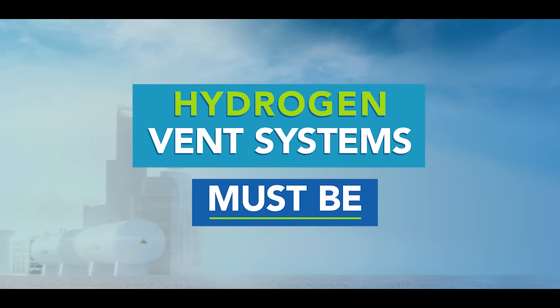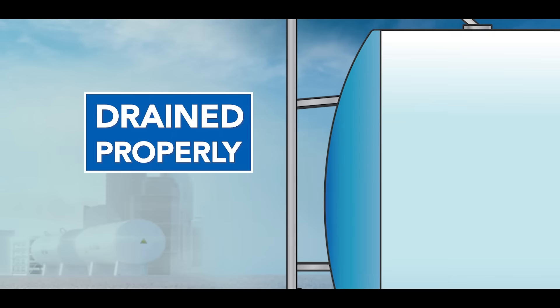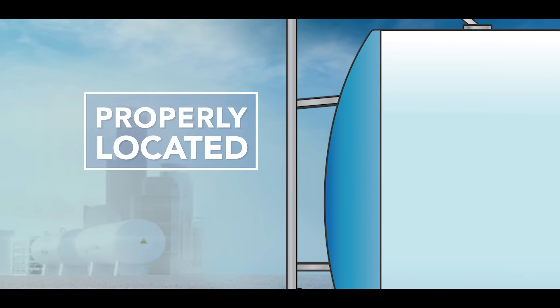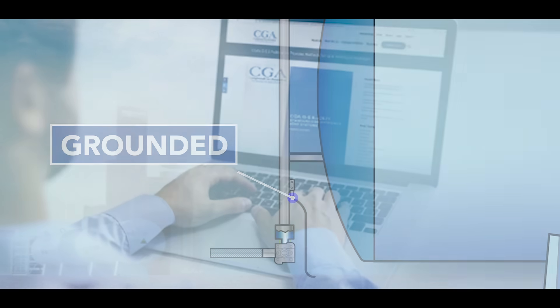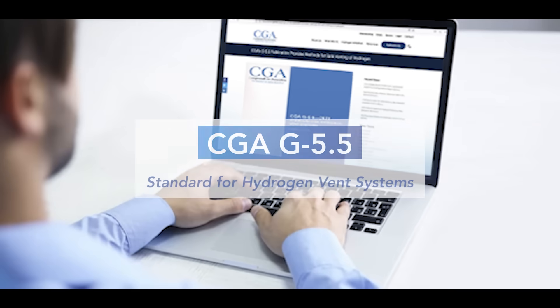Hydrogen vent systems must also be drained properly to prevent condensation buildup and divert cold vapors, located to prevent vented gas from being directed onto the supply system, personnel, and adjacent structures, and grounded to provide static electricity and lightning protection. For more information, please see CGA G5.5 standard for hydrogen vent systems.